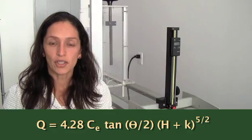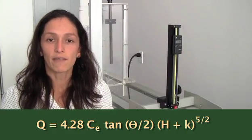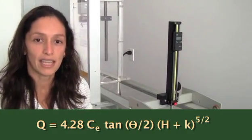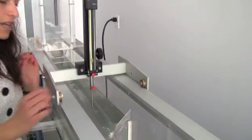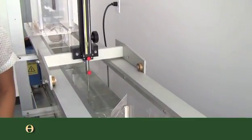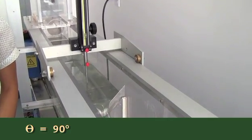The discharge coefficient C sub E is a function of the angle theta of the weir. For this case, theta is equal to 90 degrees.